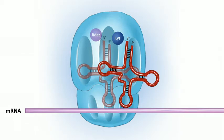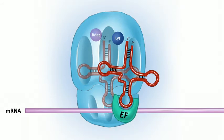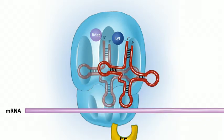The incoming charged aminoacyl-tRNA binds the ribosome at the A site — A for aminoacyl. This binding requires elongation factors, or EFs, not initiation factors. The elongation factors help the incoming tRNA bind to the A site, and this again uses energy from GTP.